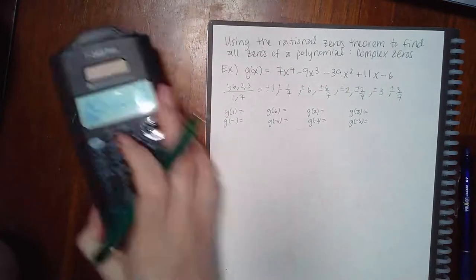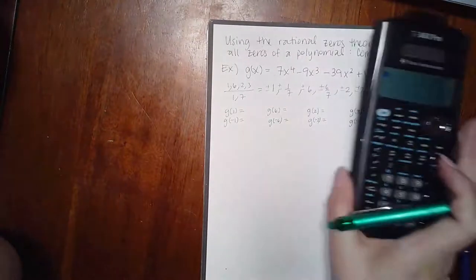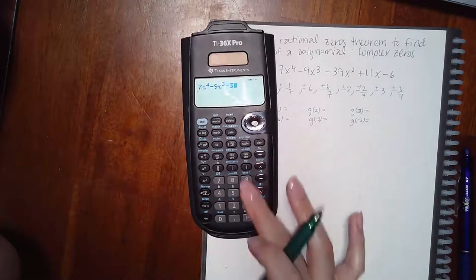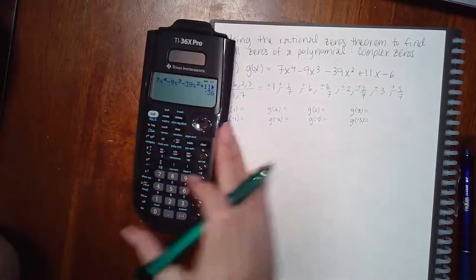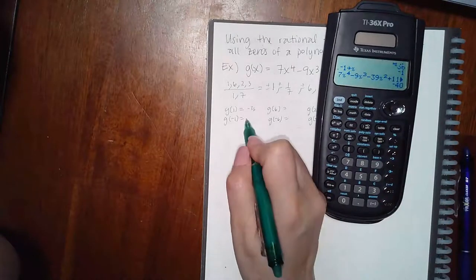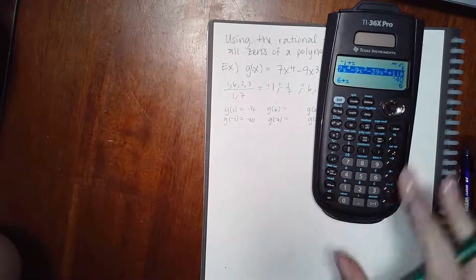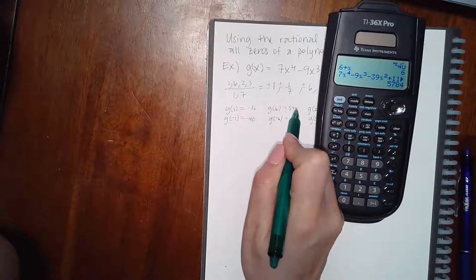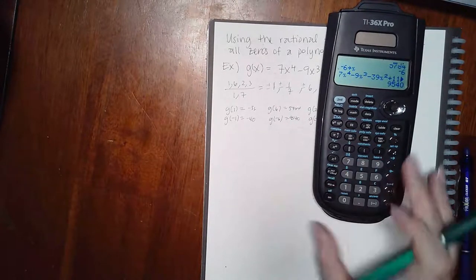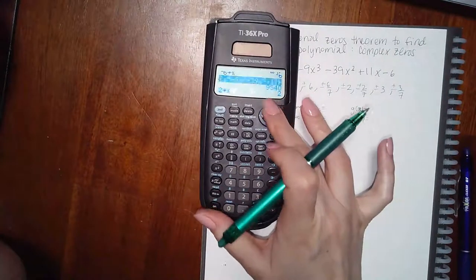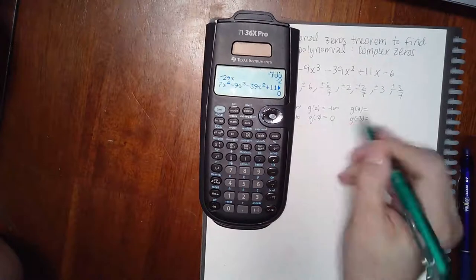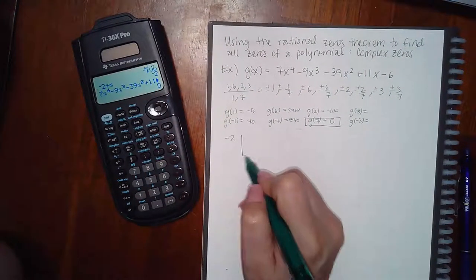So 1 stores x, clear, and then 7x to the 4th minus 9x to the 3rd minus 39x squared plus 11x minus 6. Plug in negative 1, we get negative 40. Plug in 6, we get 5,784. It really doesn't matter what number, we just know it's not 0. 2. Negative 2. Ha-ha, finally got one. So negative 2 is the guy. That will give us a remainder of 0.